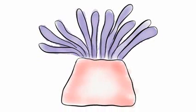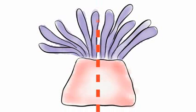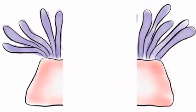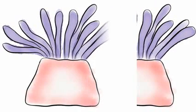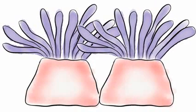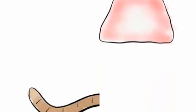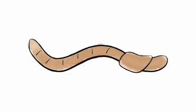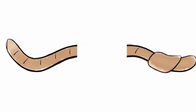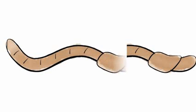Some organisms produce offspring by splitting into pieces. A sea anemone can split down the middle, resulting in the production of another individual identical to the original. Some worms, if split, will continue to live as two identical worms.